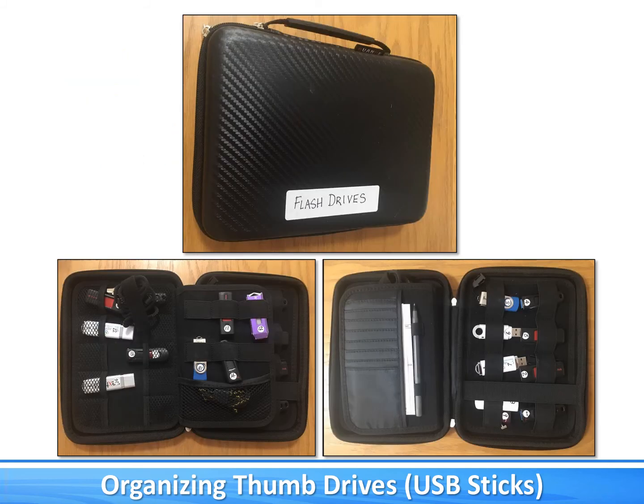A thumb drive case can be purchased in many places. The zippered case shown was one I purchased on Amazon for under $20. The case has a center insert which flips from side to side. I've flipped the insert to the left and you can see the pocket in it that I used to keep the log I created in Excel, similar to the one for the family history handouts. There's also a place for a pen, which can be used to write on the log, so you can physically update the log rather than doing it on the computer.